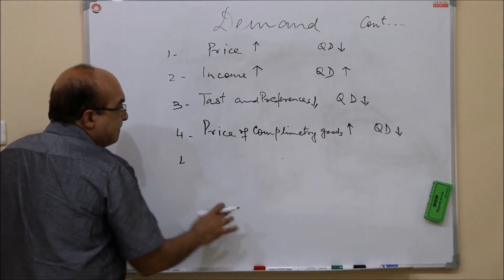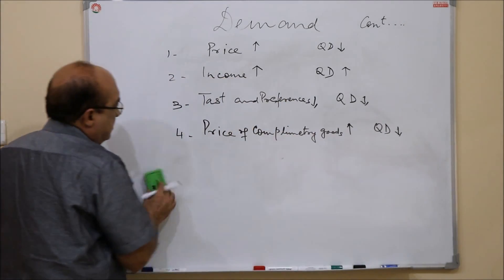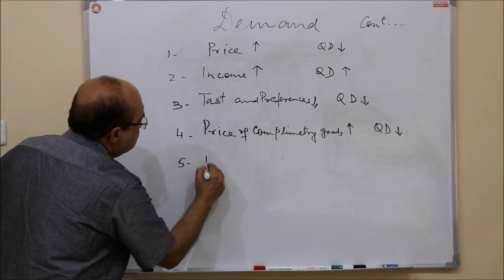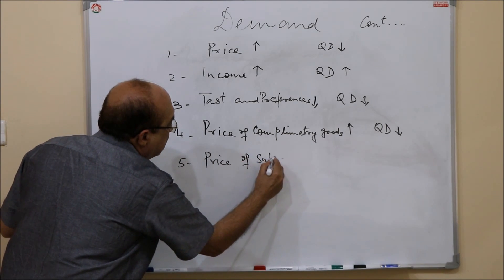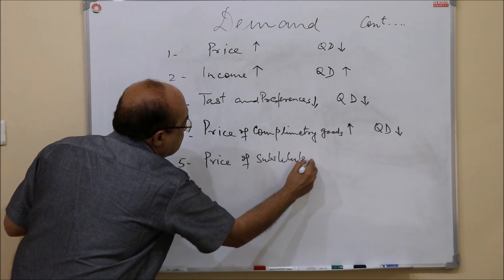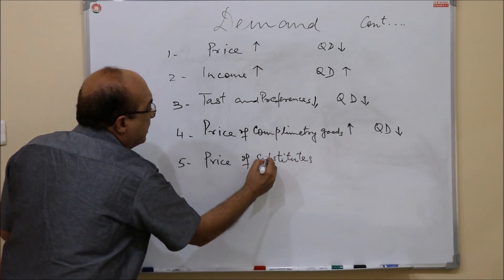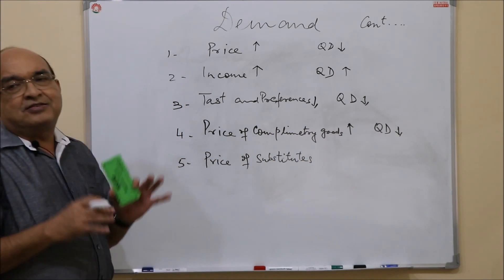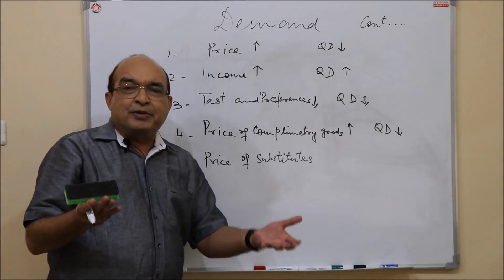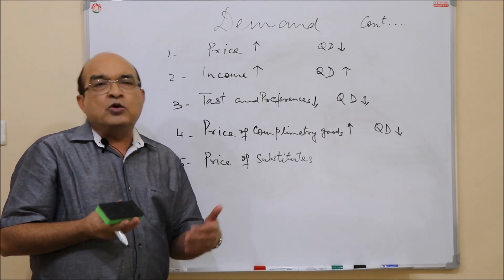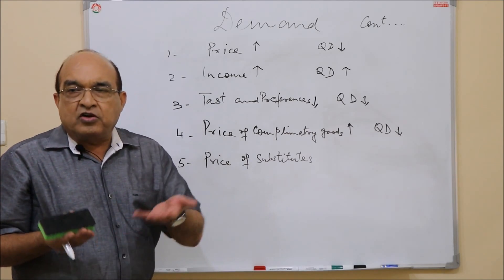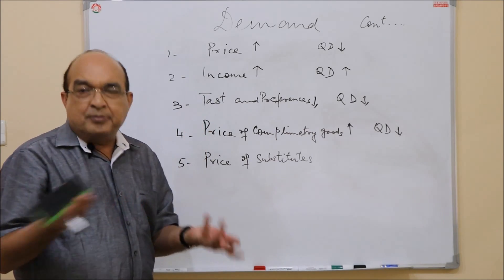Similarly, the price of substitutes. Substitutes are those goods that can replace the good in question. Say, for example, Coke and Pepsi. If Pepsi price goes up, there is likelihood that the demand for Coke will go up - I mean the quantity demanded. So price of substitutes and quantity demanded are positively related.